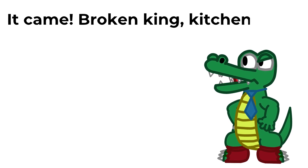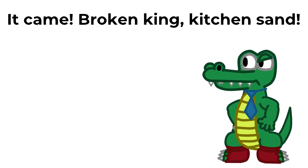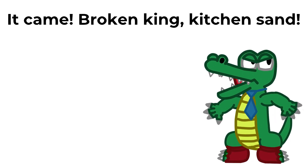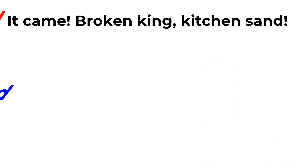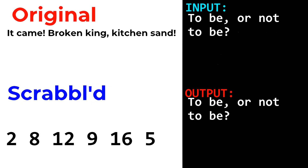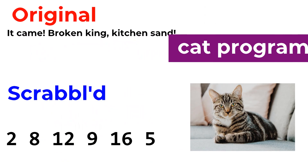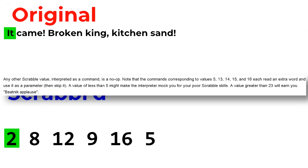I got lazy and started only using one word for each value because deep down, computers hate poetry. So, let's look at another program — and before you click off, don't worry, it's much shorter. It came! Broken King Kitchen Sand! Hmm. Well, Broken King could be a metaphor for monarchy's falling, and Kitchen Sand could be a metaphor for... You know what? Forget it. This is pointless. So, this program takes an input and spits it back out at you. This is referred to as a cat program. The word it has a value of 2 and it doesn't do anything. The interpreter is supposed to mock me for this since it's a very short word, but it doesn't.